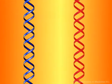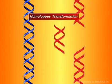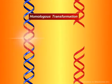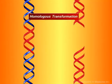Once inside the bacterium, the resistance gene may be transferred from the naked DNA to the chromosome of the host bacteria by a process known as homologous transformation. Over time, the bacterium may acquire enough of these resistance genes to result in remodeling of the segment of the host DNA.